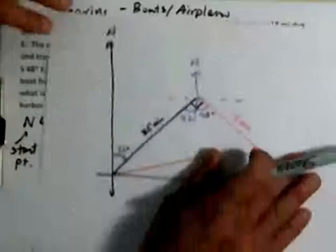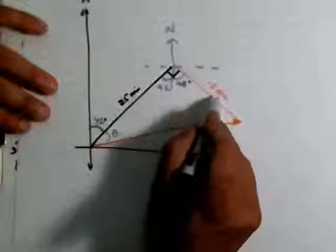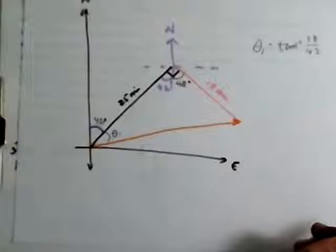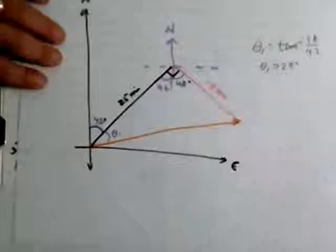What do we do from here? We have to figure out what this angle is right here. Let's call this theta 1. We are given the opposite and the adjacent. Theta 1 is equal to the tangent inverse of 18 divided by 42. I'm going to use my calculator. Tangent inverse of 18 divided by 42. That gives me approximately 23 degrees.